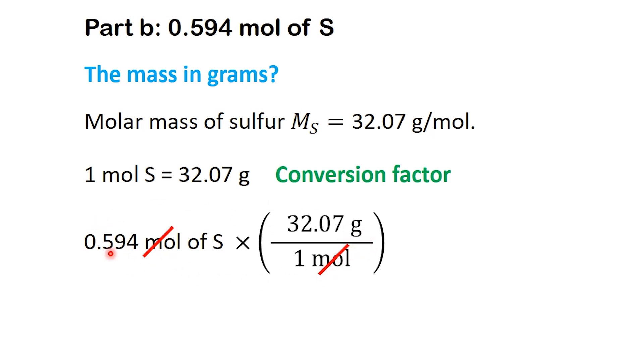Now, let's multiply. 0.594 times 32.07 equals 19.05 grams. So the final answer is 0.594 moles of sulfur equals 19.05 grams.